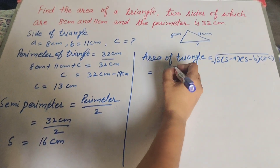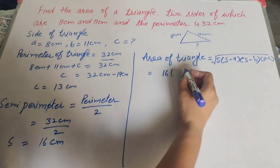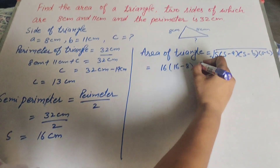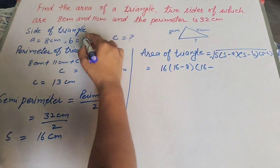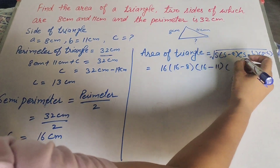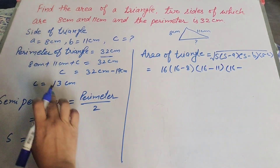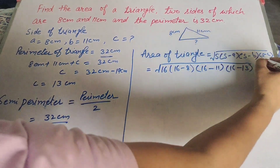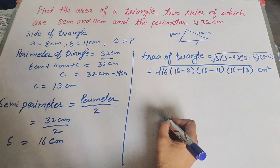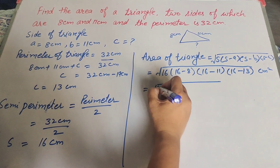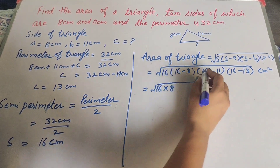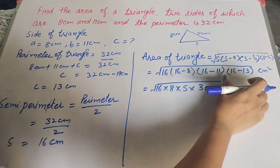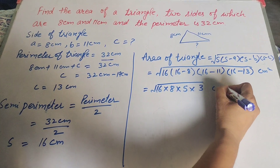Substituting the values: s equals 16, s minus a equals 16 minus 8 equals 8, s minus b equals 16 minus 11 equals 5, and s minus c equals 16 minus 13 equals 3. So the area equals the square root of 16 times 8 times 5 times 3 centimeters squared.